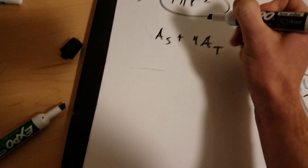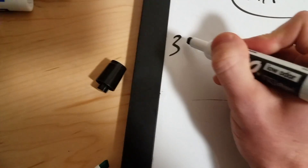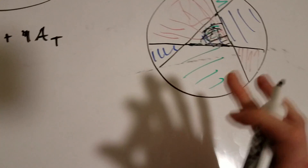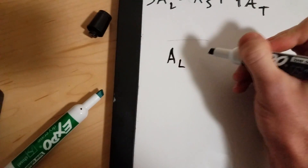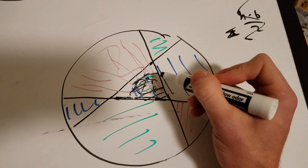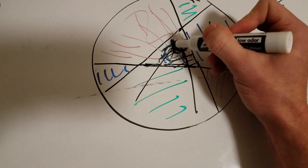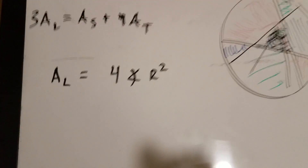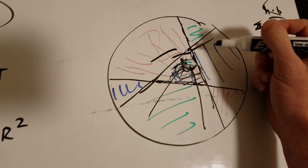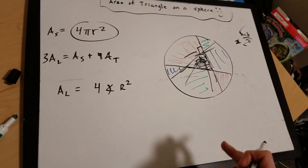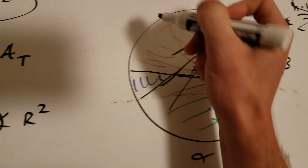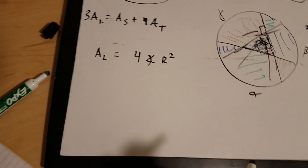So when you add up the three areas of the lune pairs, the area of a lune equals four times its angle times r². Think of it like 4πr² for a full sphere, but instead of π (which represents four 90° angles summing to 360°) we just have our specific angle alpha. We need three of these, so let's call the angles of the three lunes alpha, beta, and gamma.